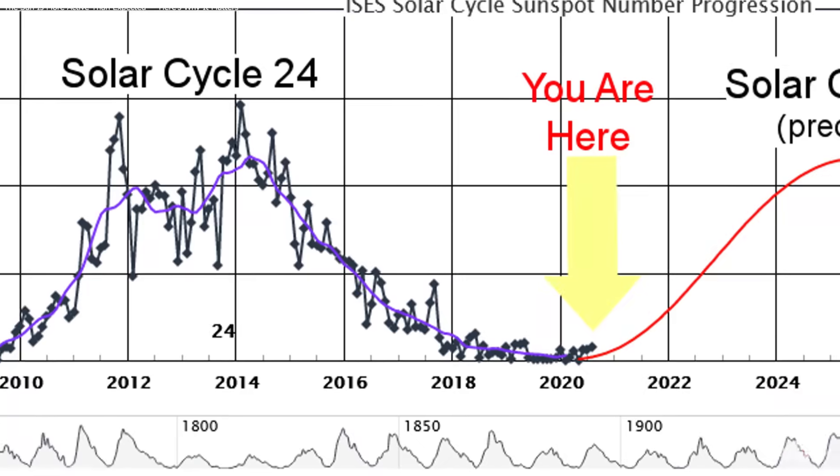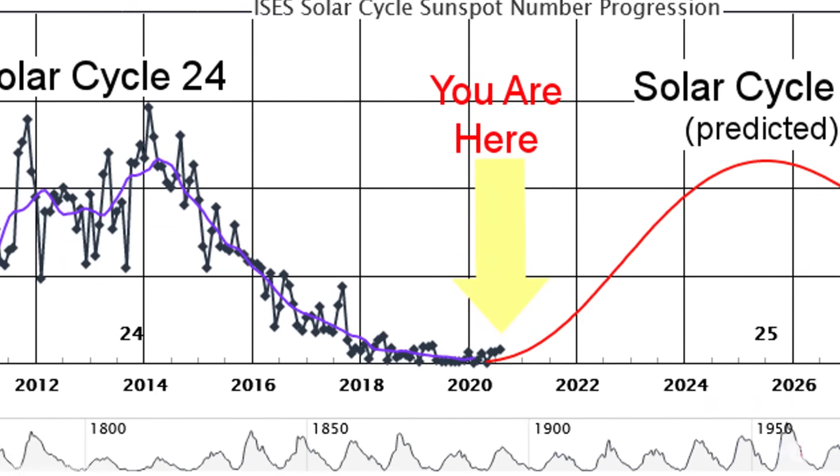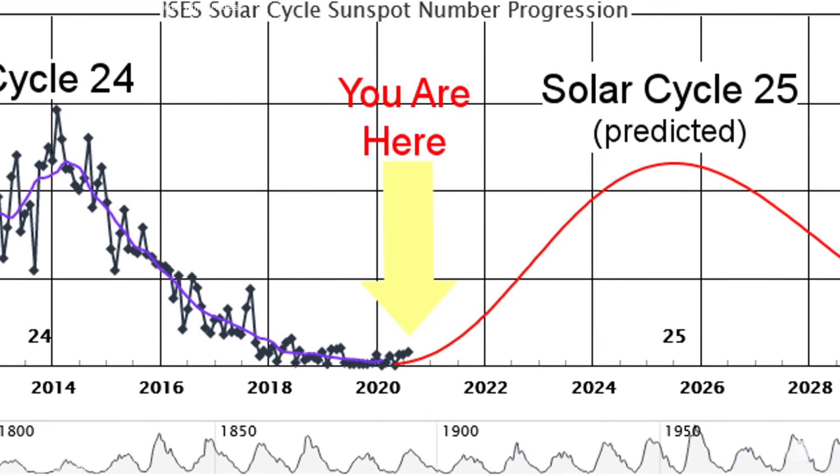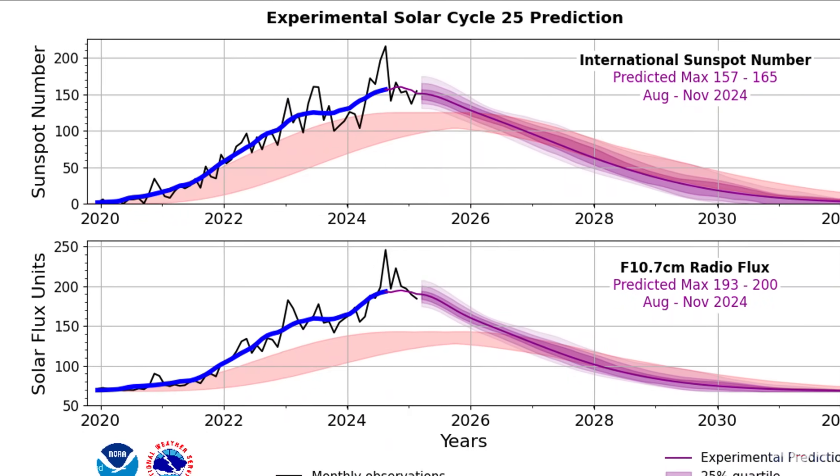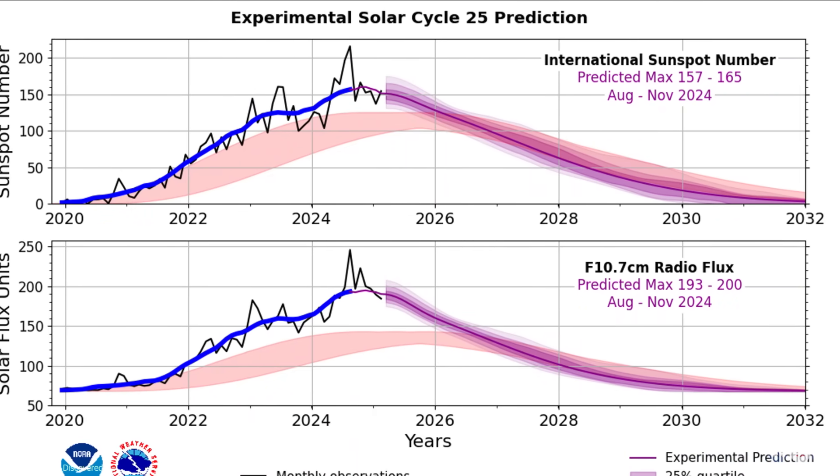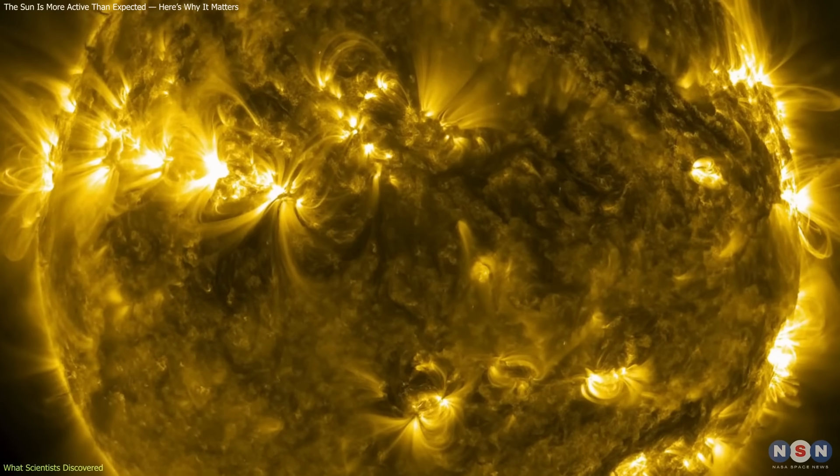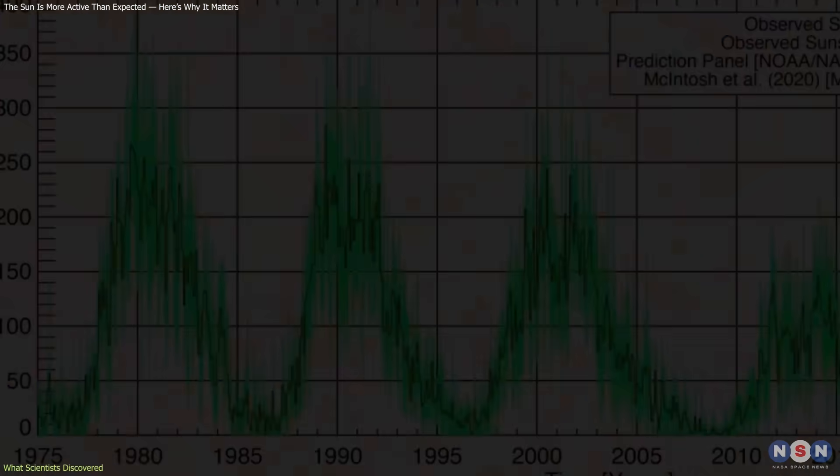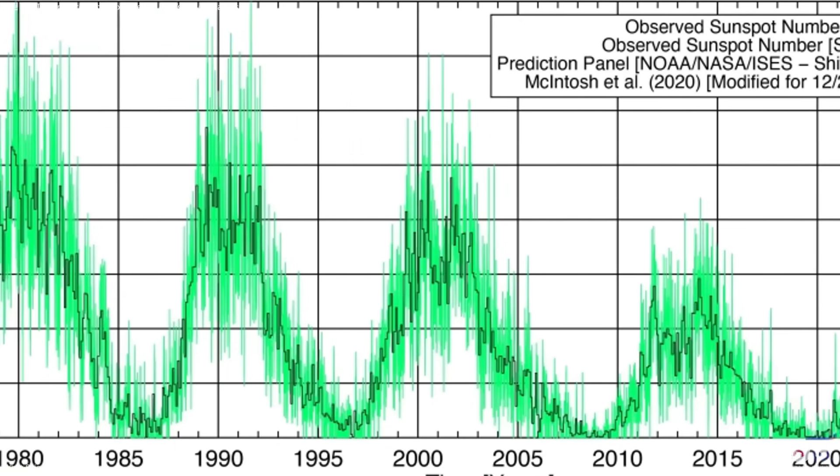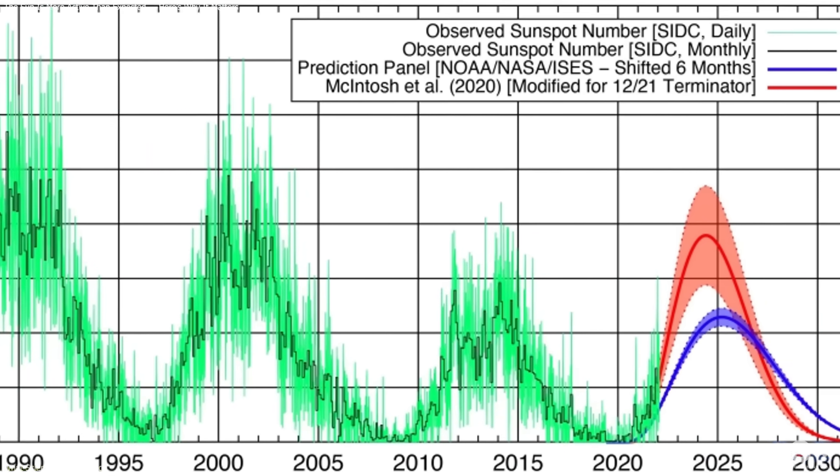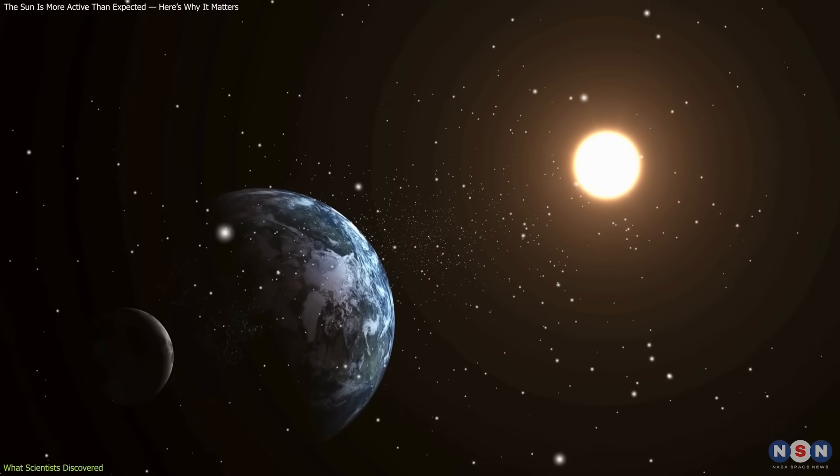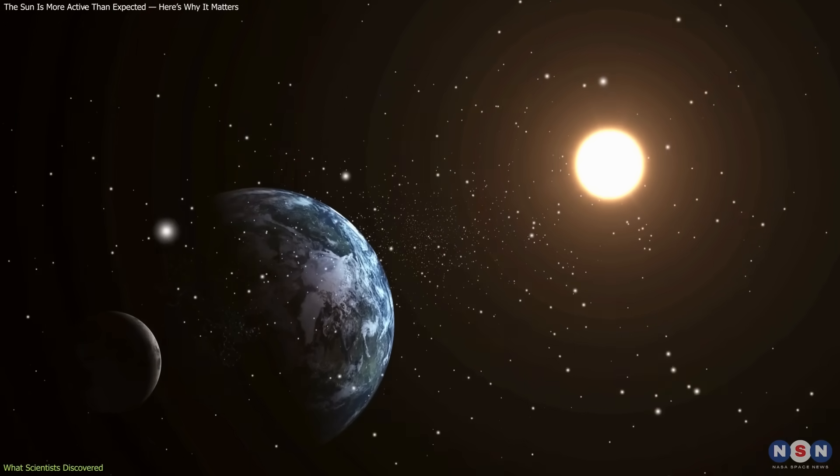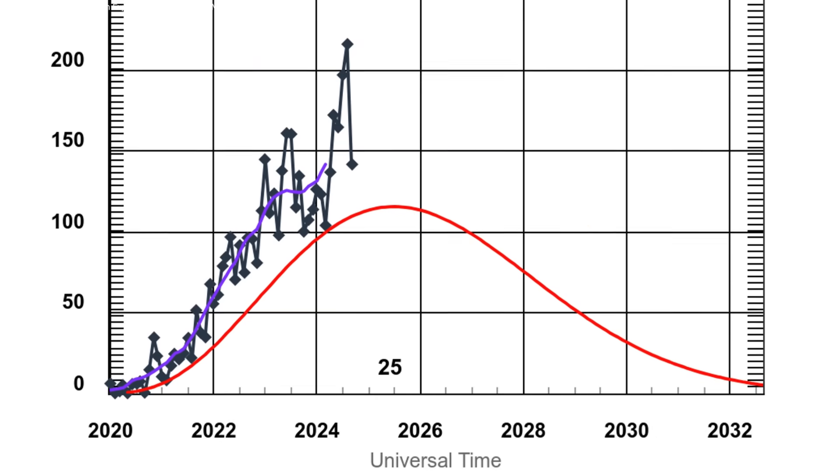The surprise began when Solar Cycle 25 officially started in December 2019. At the time, predictions described it as a weak cycle, possibly weaker than its predecessor. That expectation was based on long-term trends. For decades, solar wind strength and sunspot activity had been declining. Many believed we were entering a prolonged minimum, similar to quiet periods seen in past centuries. Instead, activity started climbing.